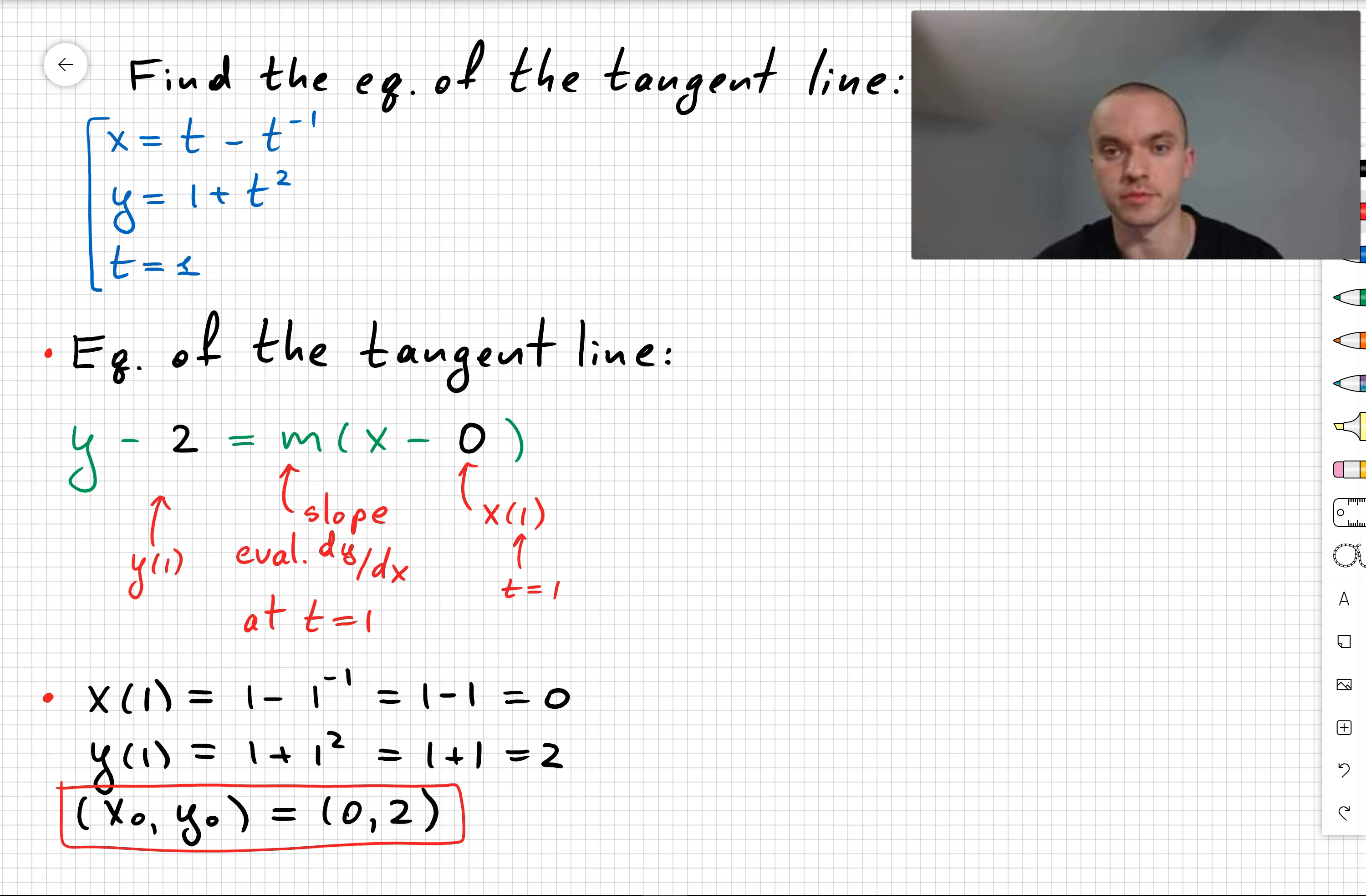After that, I'm going to take the point (0, 2) and replace x0 and y0 with 0 and 2, correspondingly. The only thing left is the slope.